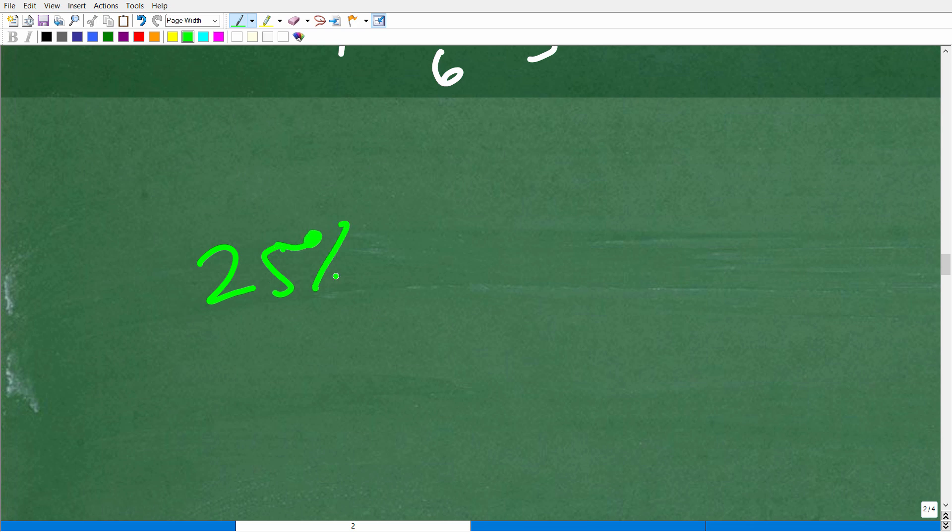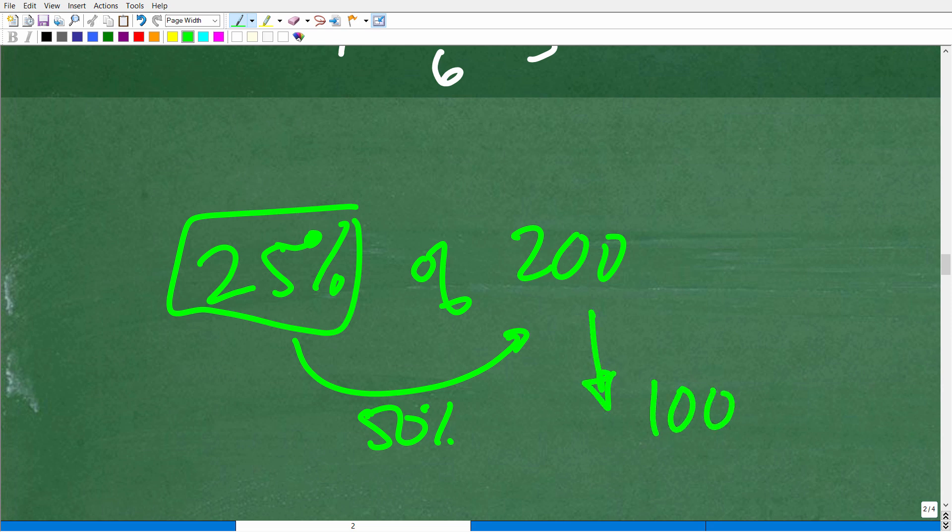If you were asked to find 25% of 200, if you had to do this mentally, there's all different sorts of ways you could do this. 25%, you could be like, well, what's 50% of 200? 50% of 200, you cut that in half, that's 100. And then what's half of that, which would be 25%, would be half of 50. So it is 50. So 50 would be 25% of 200. Now that's one mental math approach.